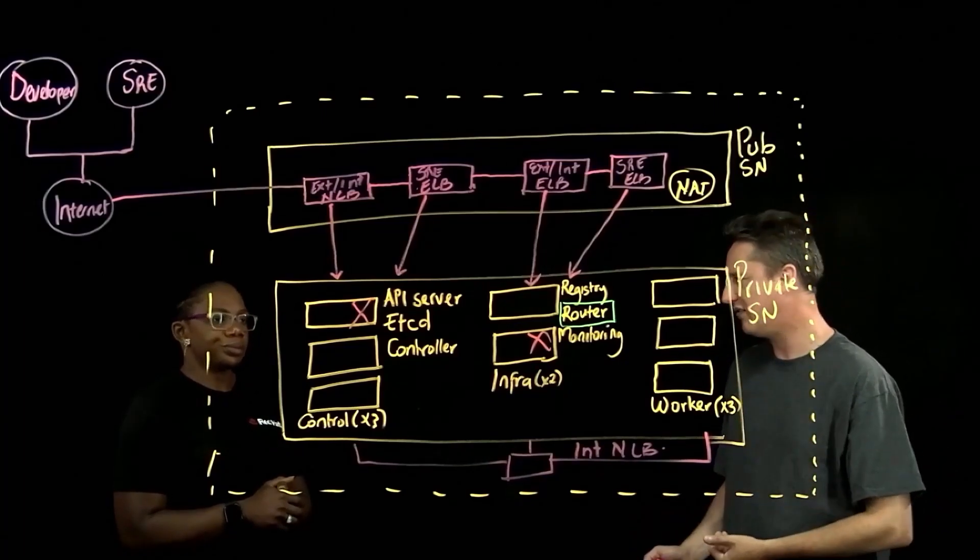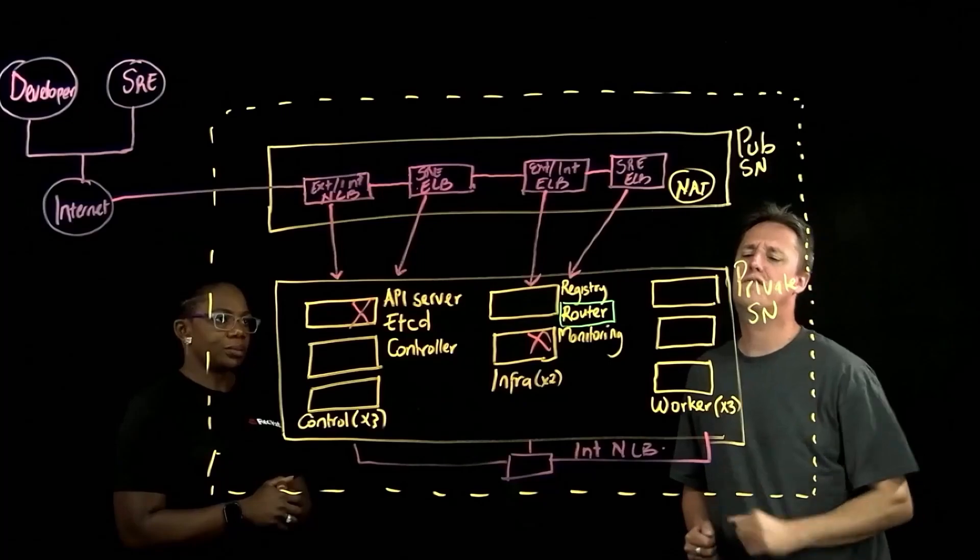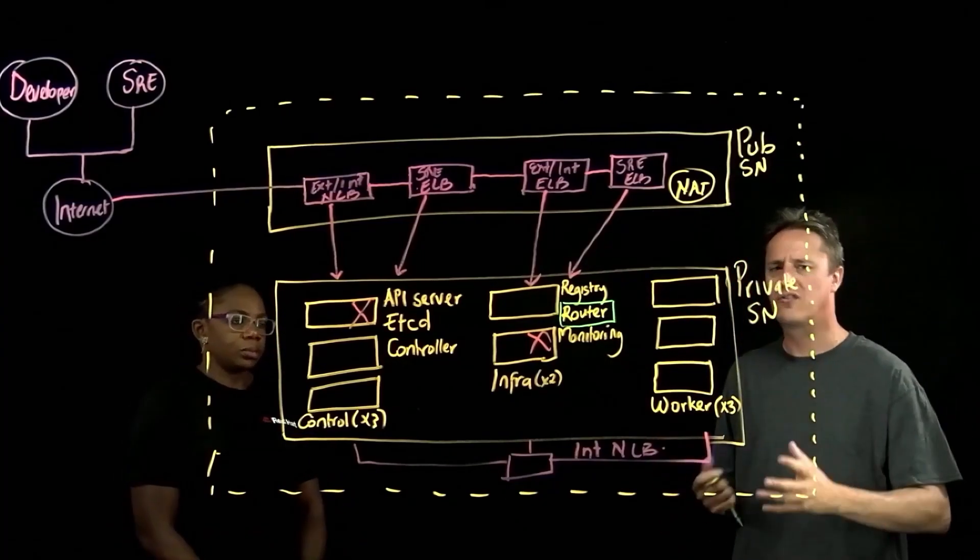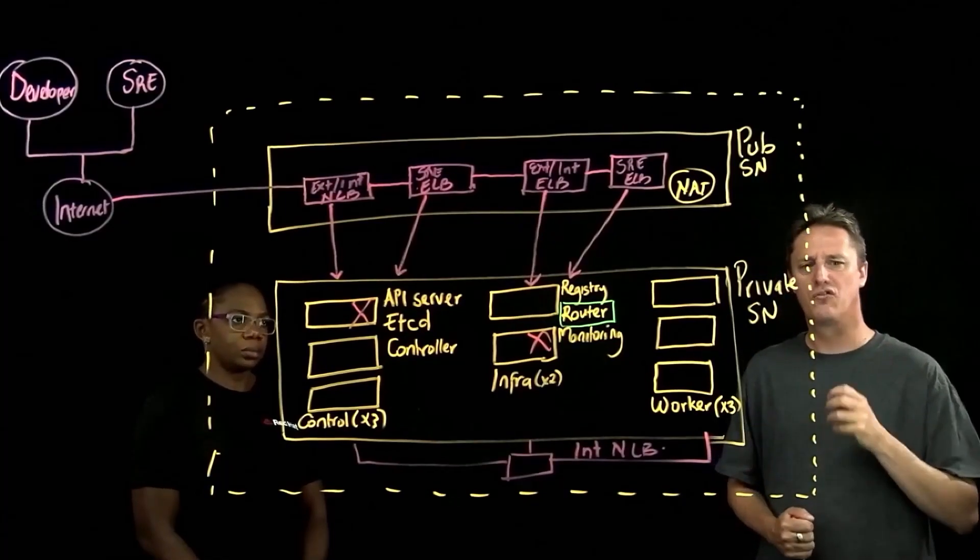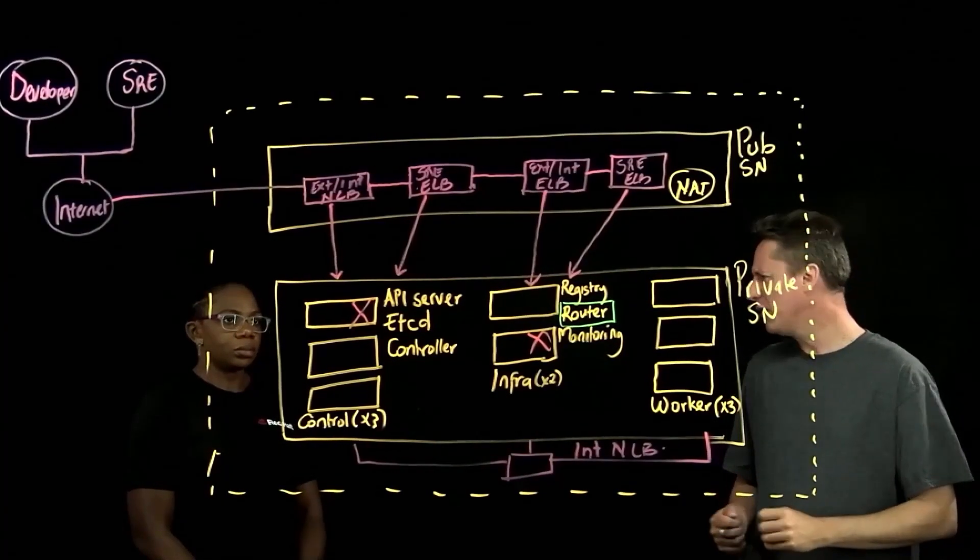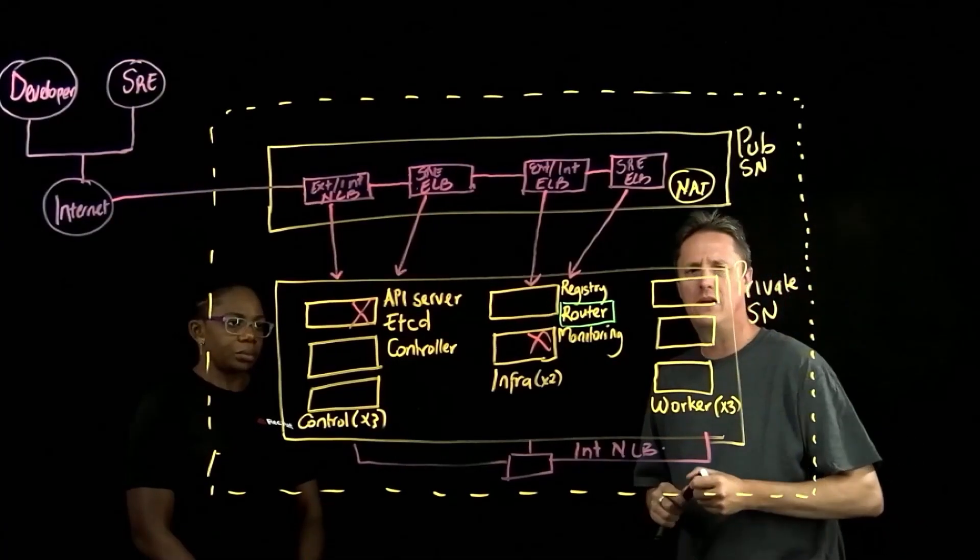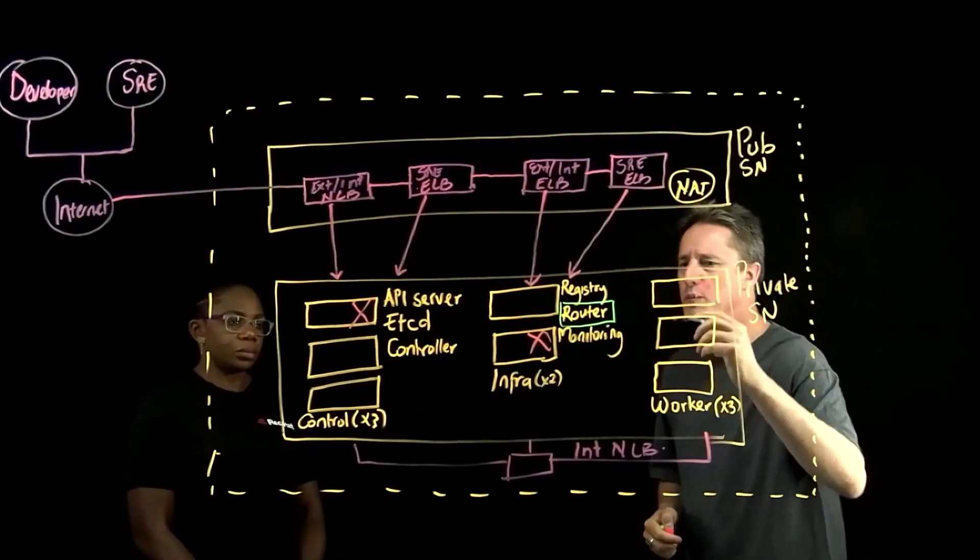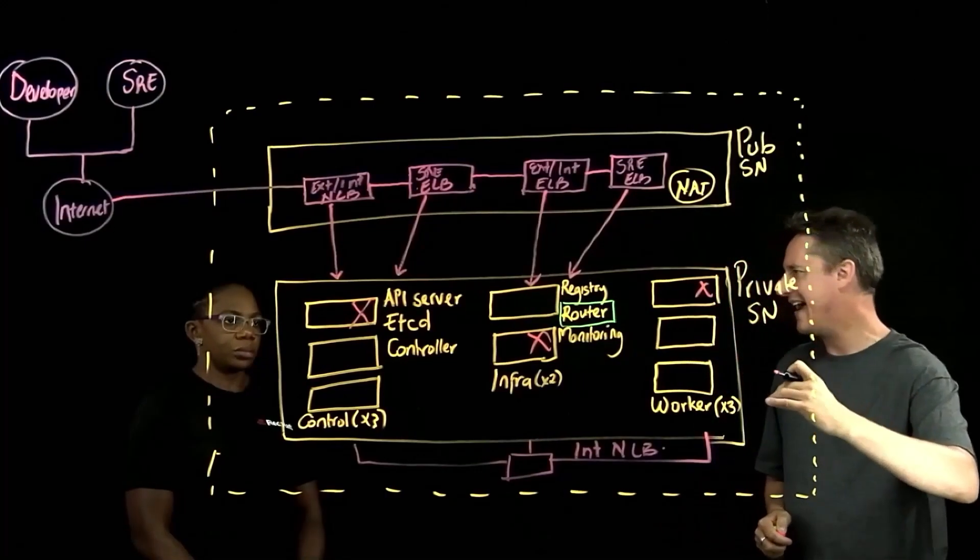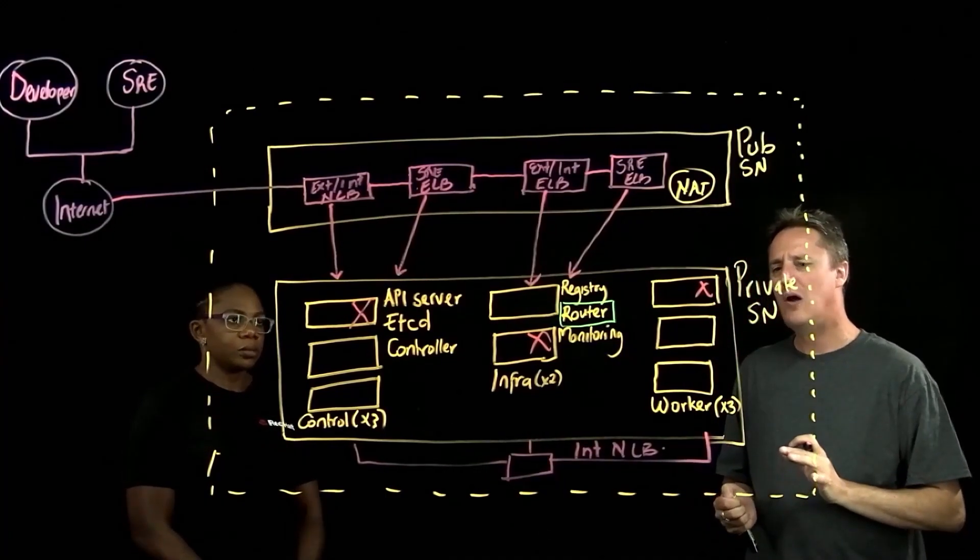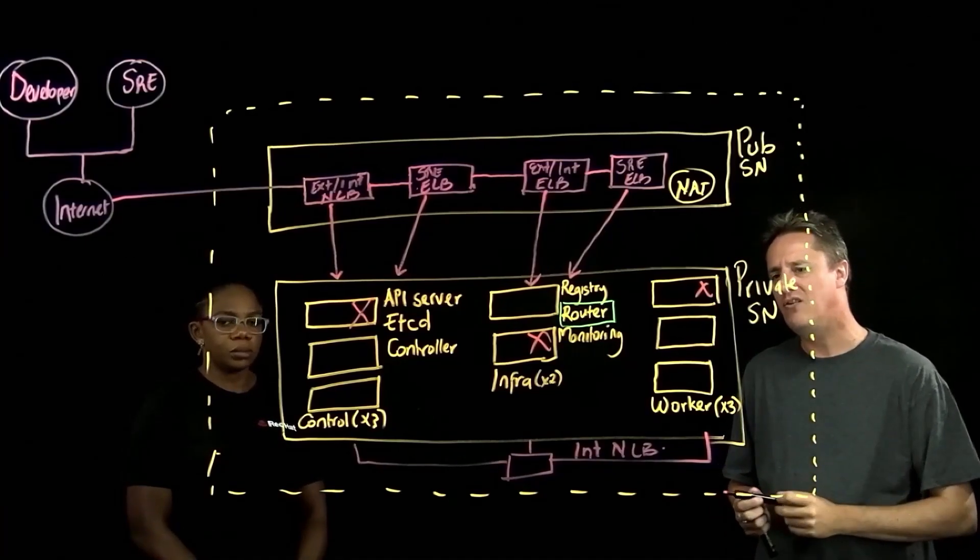And really, we've got the OpenShift availability constructs complemented by the AWS availability constructs. Quickly shifting to the actual worker nodes or the compute locations. This is where the applications are running. These are a little bit more disposable. If one of these had to fail, my expectation would be that Kubernetes would detect that and try and move the workloads around.